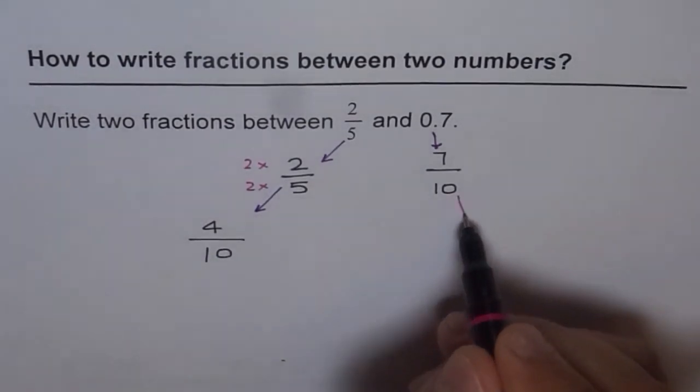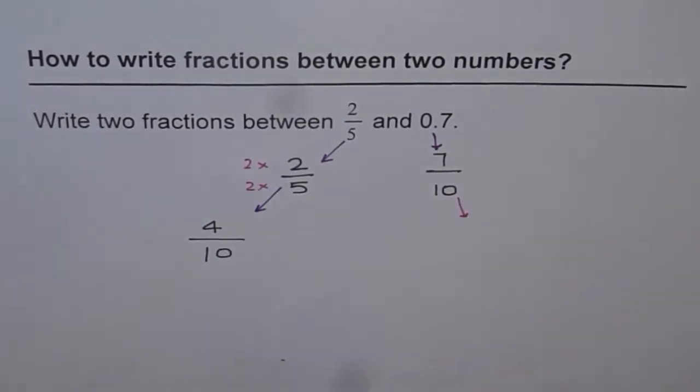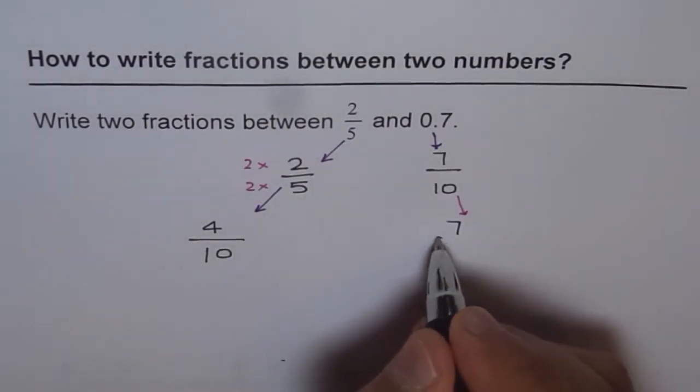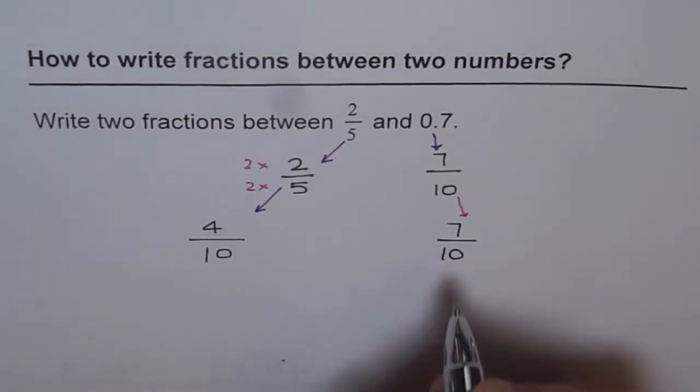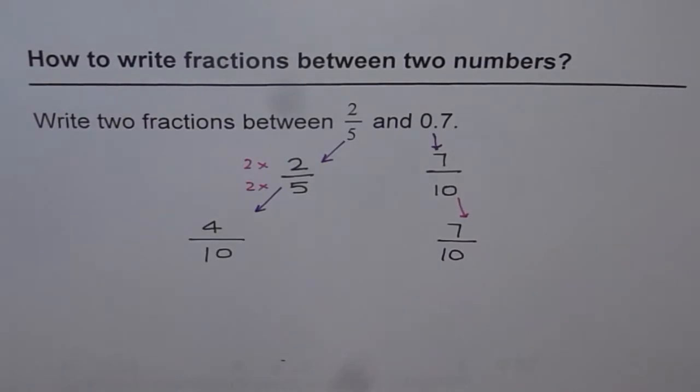On the other side, what do we have? We have 7 over 10. Now can you write two fractions between them?